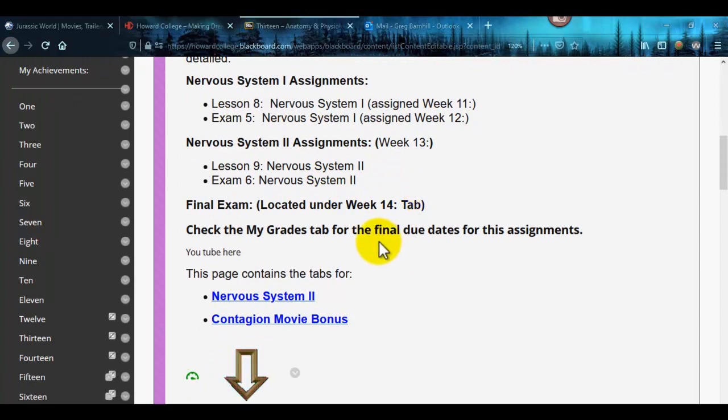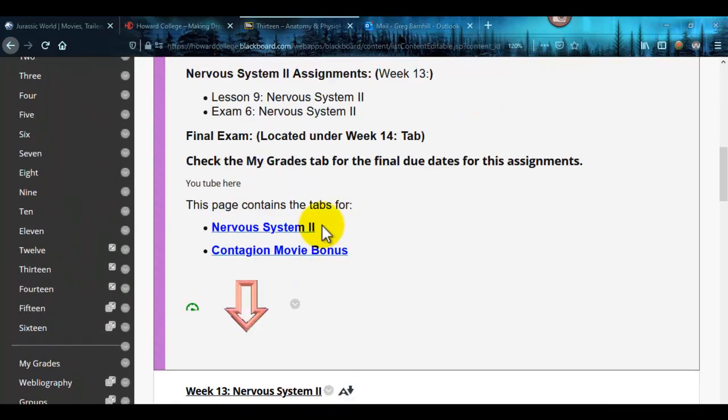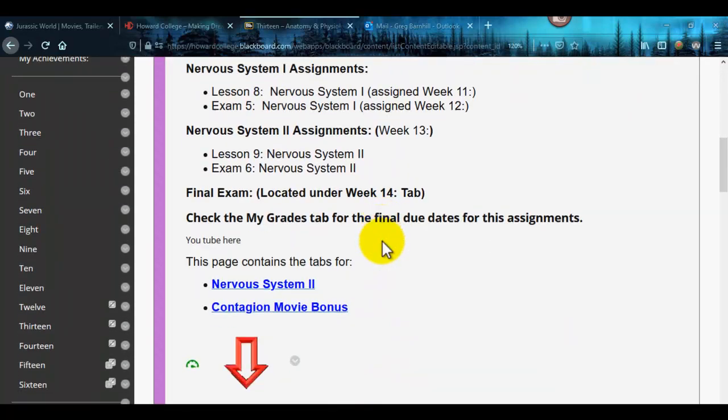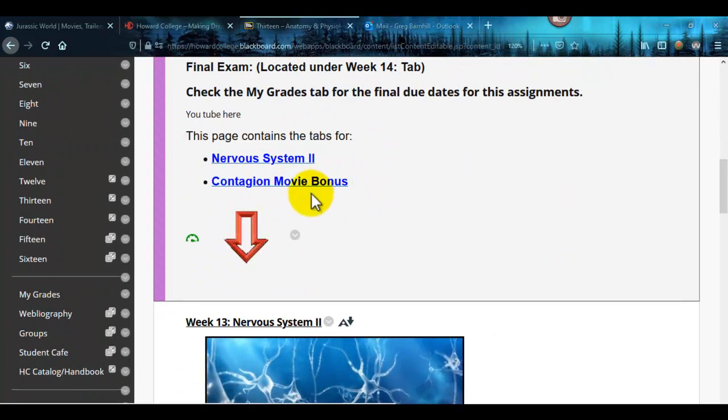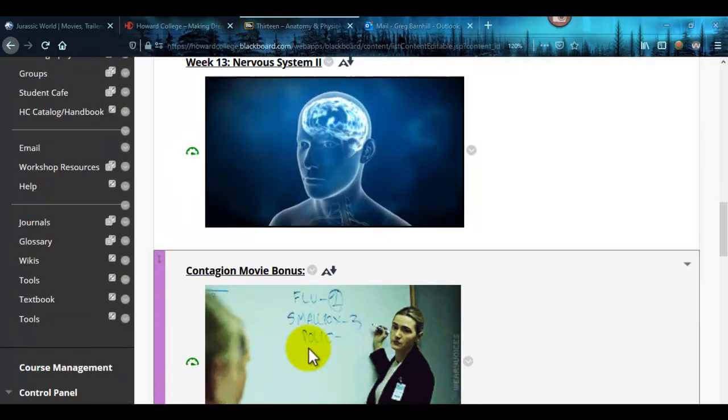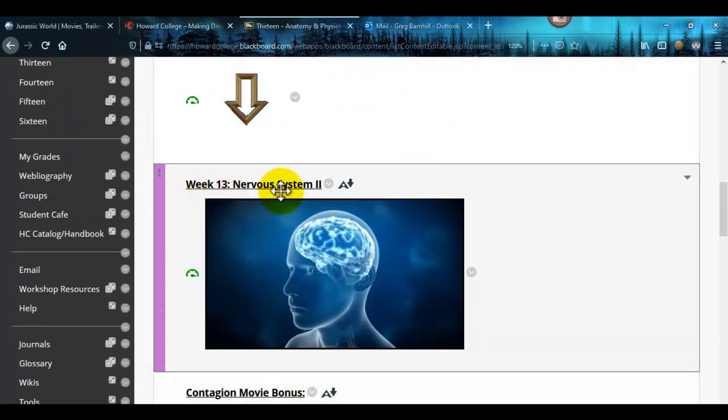Week 13 is going to be the second part of the nervous system, which has two parts to it. There will also be a video on the final exam for you to look at. On this page you have Nervous System 2 and the Contagion bonus, which I'll go over as well.